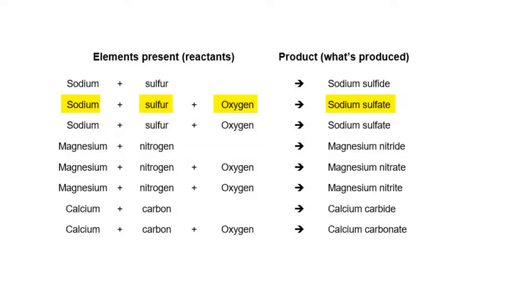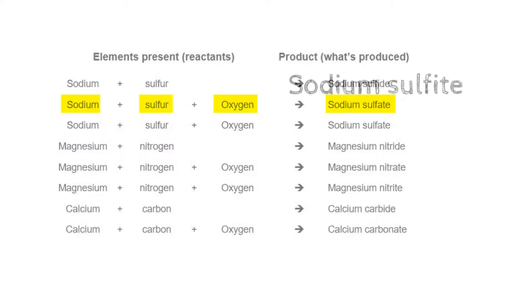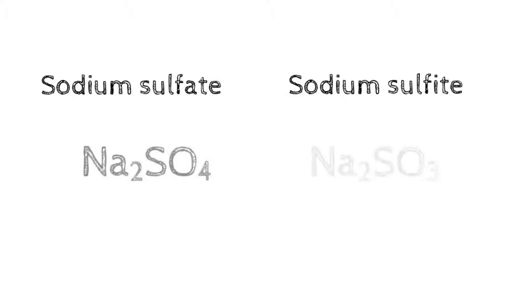Just pointing out again that the only difference between I-T-E and A-T-E compounds is the number of oxygen atoms. To show this, here are the formulae for sodium sulfate and sodium sulfite. And note the difference in the number of oxygens in each of these formulae.